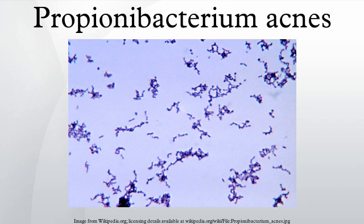Propionibacterium acnes is the relatively slow-growing, typically aerotolerant anaerobic, gram-positive bacterium linked to the skin condition acne. It can also cause chronic blepharitis and endophthalmitis, the latter particularly following intraocular surgery. The genome of the bacterium has been sequenced and a study has shown several genes can generate enzymes for degrading skin proteins that may be immunogenic. This bacterium is largely commensal and part of the skin flora present on most healthy adult human skin.